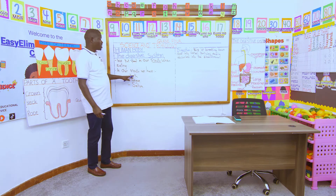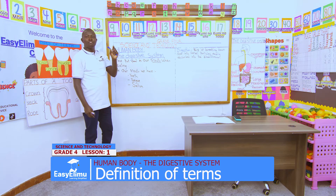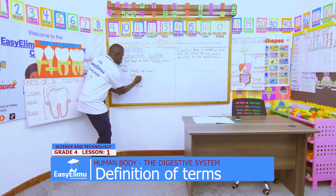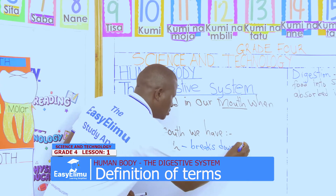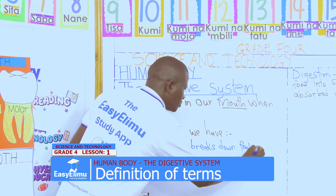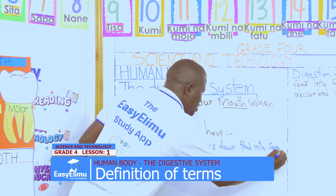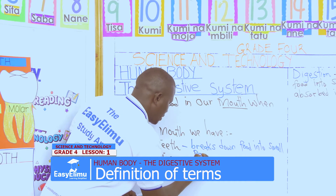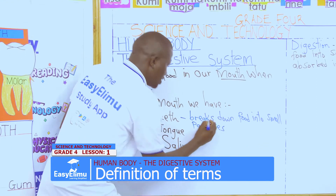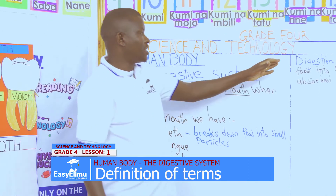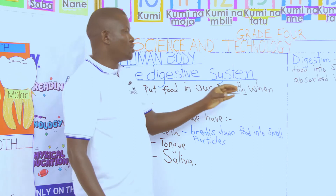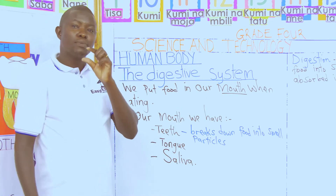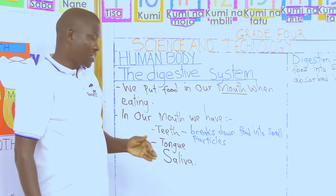When we come to the teeth, we say the work of the teeth is to break down the food. When you are biting the food, you are breaking it down into small particles. So the work of the teeth is to break down food into small particles. We have said digestion is the breaking down of food into small particles which are easily absorbed into the bloodstream, and the part of the mouth that does this is the teeth.